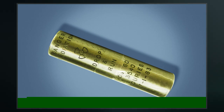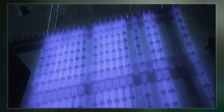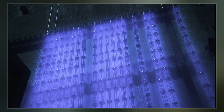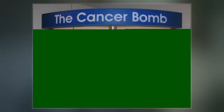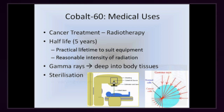Measurable quantities are also produced as a by-product of typical nuclear power plant operation and may be detected externally when leaks occur. In the latter case, the incidentally produced Co-60 is largely the result of multiple stages of neutron activation of iron isotopes in the reactor's steel structures via the creation of its Co-59 precursor.